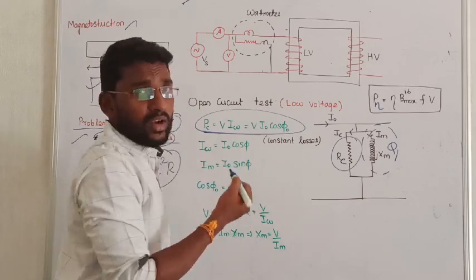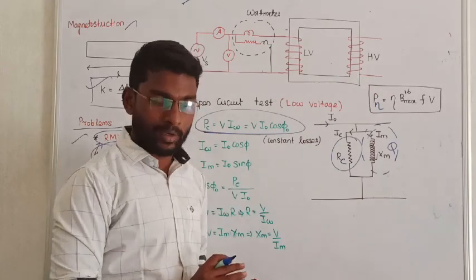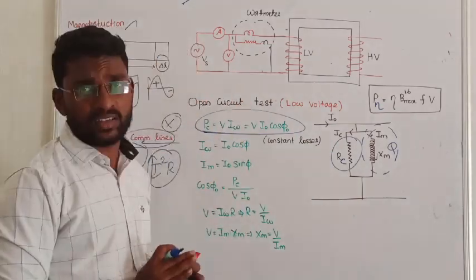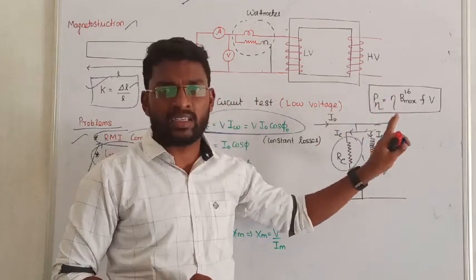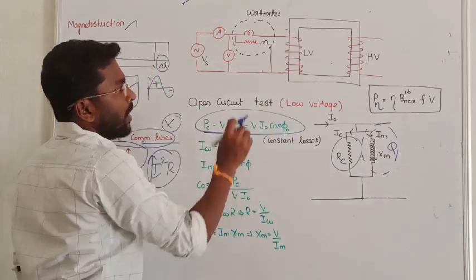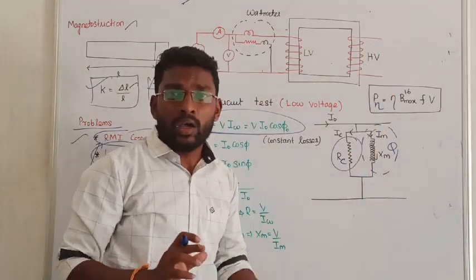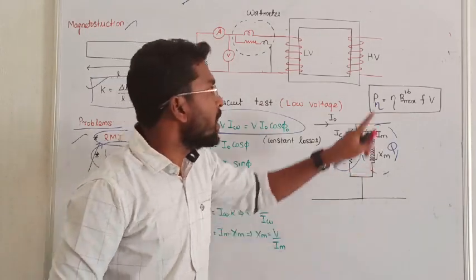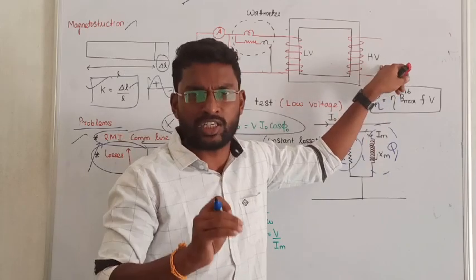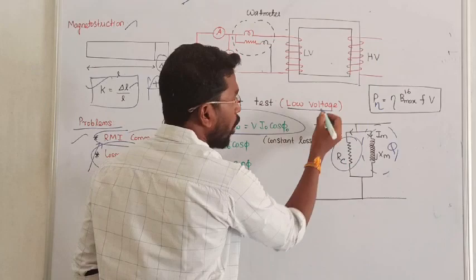The second point about the open circuit test is which side it is connected on. Usually in our transformer we have two sides: one is the HV winding side and one is the LV winding side. The open circuit test is conducted on the low voltage side. If you apply voltage on the high voltage side, it may lead to insulation damage. So to avoid high voltage stress, the open circuit test is always conducted on the low voltage side.